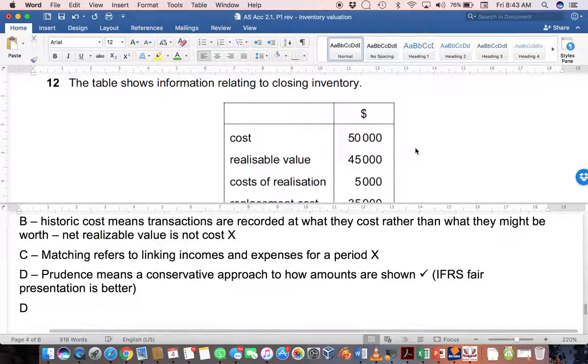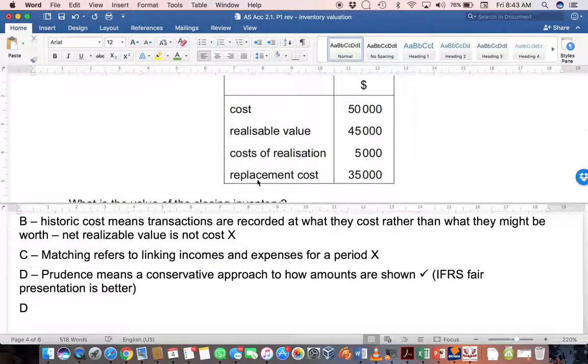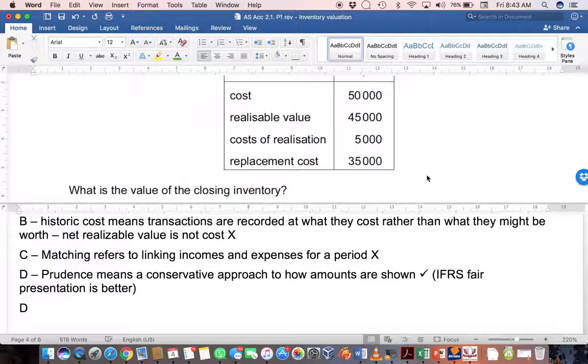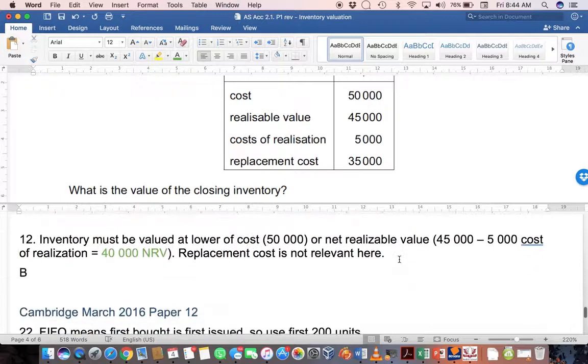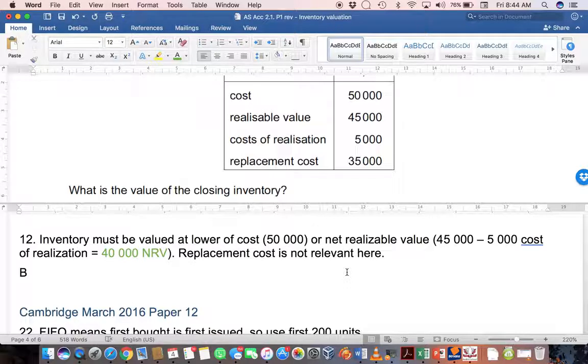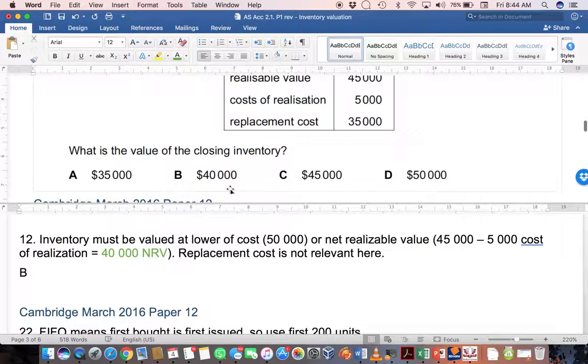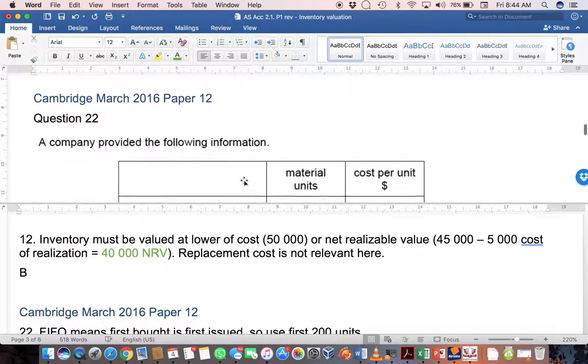Question 12. The table shows information relating to closing inventory - the cost, net realizable value, cost of realization, and replacement cost are all shown here. The question asks what is the value of closing inventory? Remember that you always want to value your inventory at the lower of cost or net realizable value. The cost is $50,000. The net realizable value would be realizable value less the costs of realization, which is $40,000. If you compare the 50 to the 40, obviously $40,000 is the lower value and that is what you would use. Replacement cost of $35,000 is not actually relevant here. The fact that you could replace it at a lower price - too bad. If you are able to get $40,000, that is the value you're going to use. Therefore you would choose B.